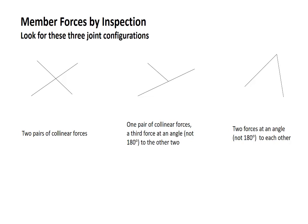We're going to be looking at these three joint configurations. If we identify a joint configuration that looks like one of these three pictures, we'll know what the answer is. When I draw these lines, they can represent truss members or applied forces. In the descriptions below, I'll just use the word forces for brevity.